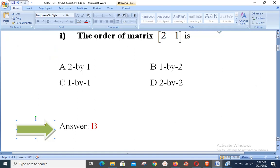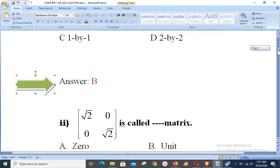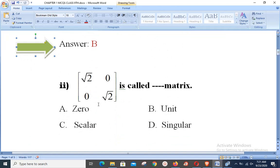Next is: a matrix having elements row-wise square root 2, 0, 0, square root 2 is called dash. Dear students, you know that if the main diagonal entries are same and are other than 1, then the matrix is called scalar matrix. So our answer in this case must be option C.